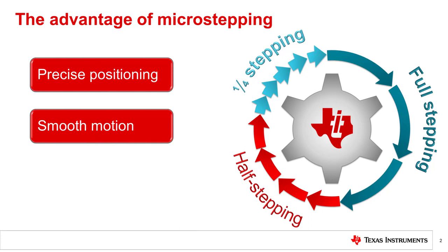By using current regulation techniques to create intermediate steps called half steps or microsteps, a stepper driver can position a load with greater accuracy. Current regulation circuits regulate the winding currents at different levels to produce magnetic fields of different strengths from each of the windings. When magnetic fields from each winding sum together, they create an overall torque which positions the rotor at various microstep positions between full steps.